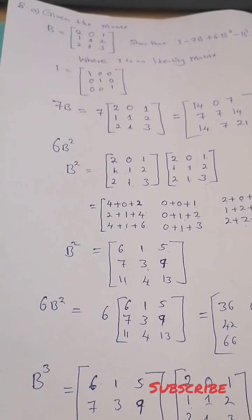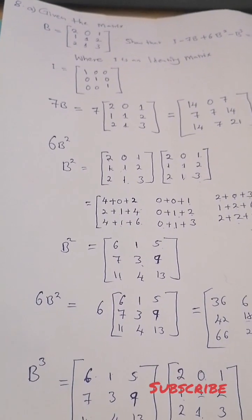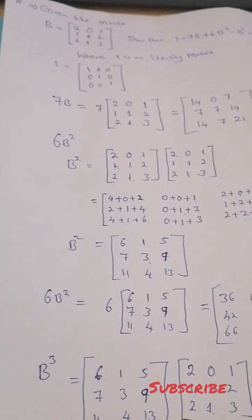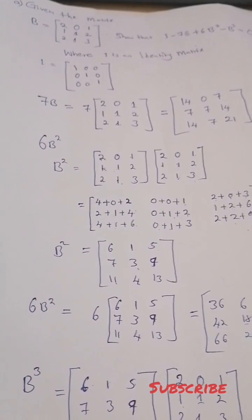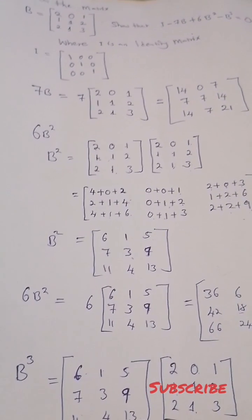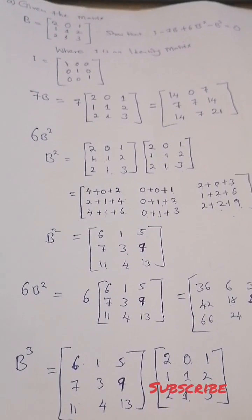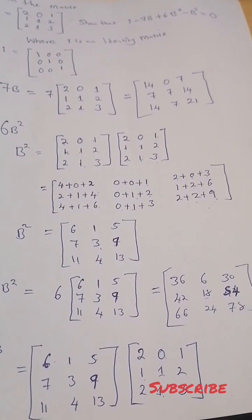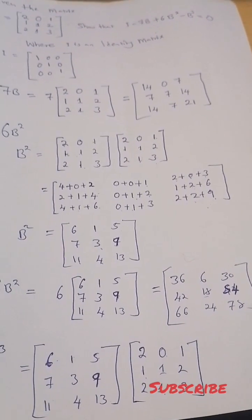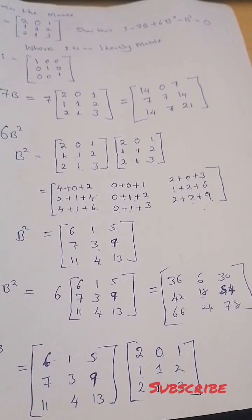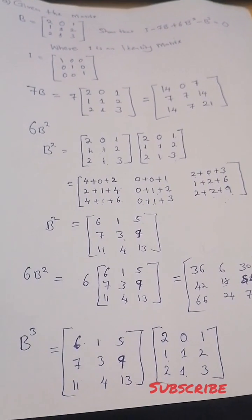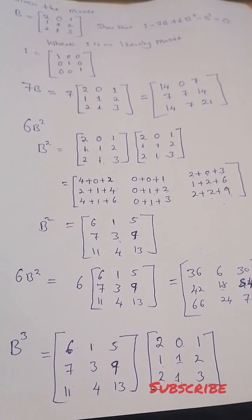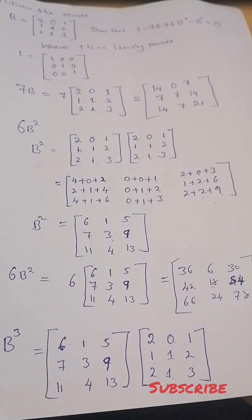First we solve 7B. We already know our matrix B, so we multiply matrix B by 7. You are going to get 14, 7, 14, 0, 7, 7, 7, 14, 21.